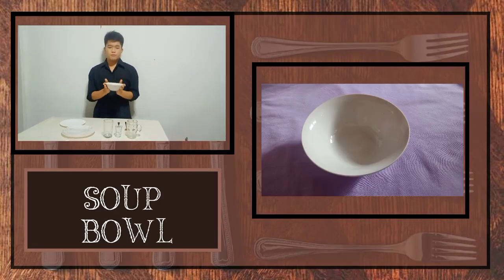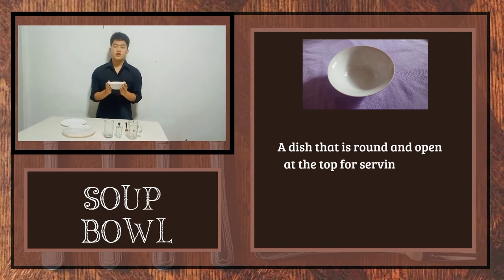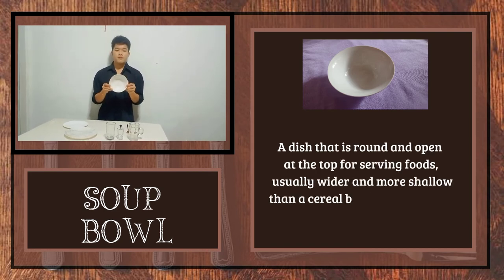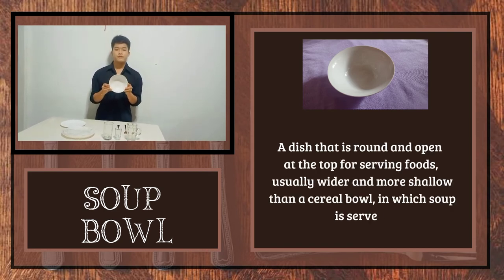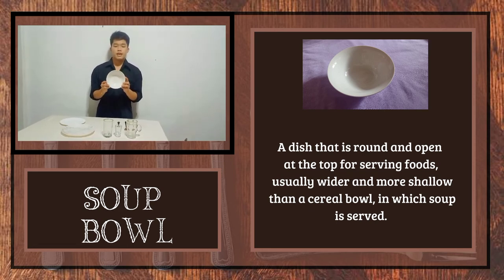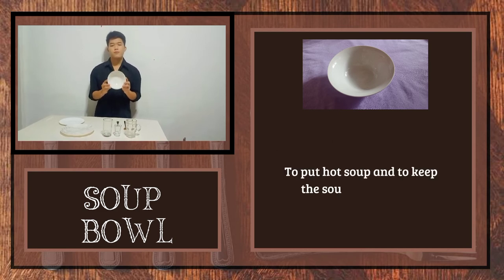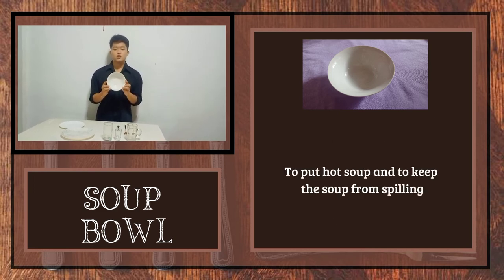Next is the dinnerware. My first example is the soup bowl. A soup bowl is a dish that is round and open at the top for serving foods, usually wider and more shallow than a cereal bowl, in which soup is served. The use of this bowl is to put hot soup and to keep the soup from spilling.